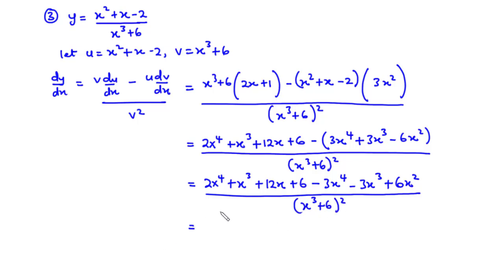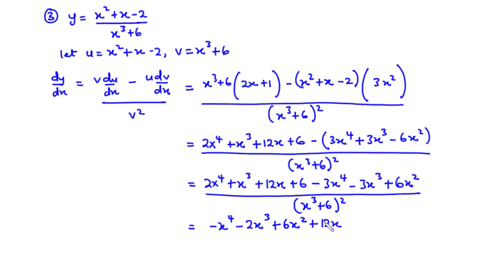Let's simplify further. 2x⁴ minus 3x⁴ gives negative x⁴. x³ minus 3x³ gives negative 2x³. We have plus 6x² plus 12x plus 6, all divided by (x³ + 6) squared.